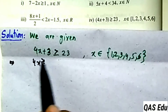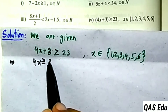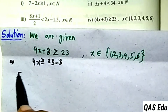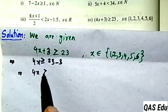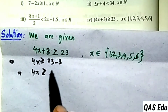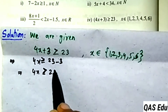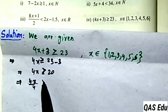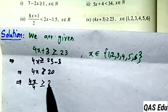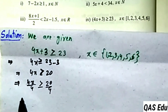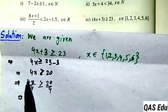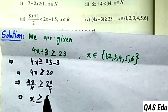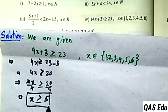4x plus 3 is greater than or equal to 23. Moving 3 to the right: 4x is greater than or equal to 23 minus 3, which gives 20. Dividing both sides by 4: x is greater than or equal to 20 divided by 4, which equals 5.